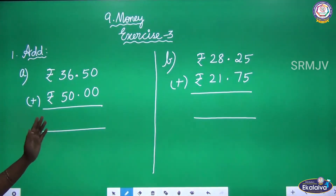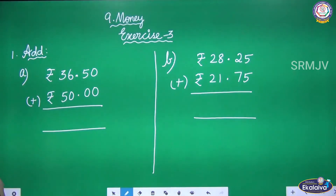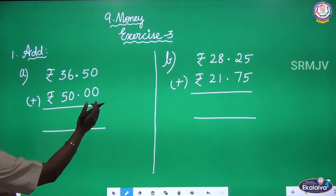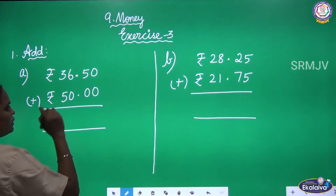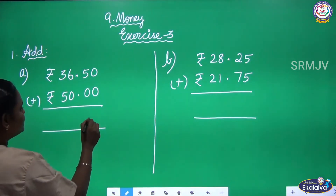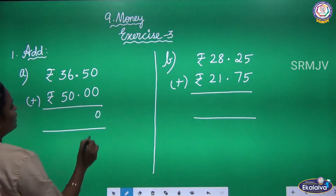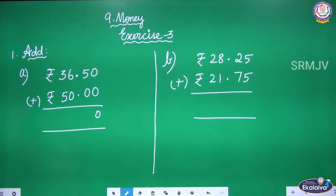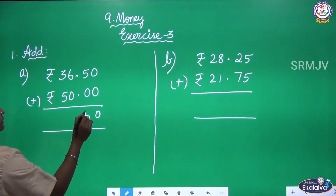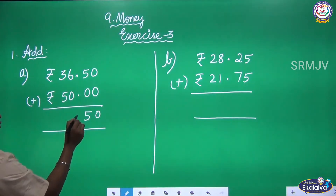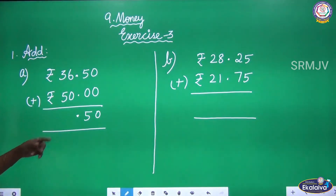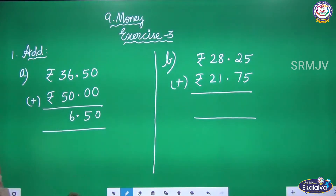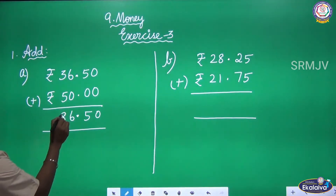Listen children. Like ordinary addition, we are going to add. First we have to add Paise, then after that Rupees. So what is 0 plus 0? 0 plus 0 is 0. Next, 5 plus 0 is 5. The dot separates Rupees and Paise. Next, 6 plus 0 is 6. Next, 3 plus 5 is 8.